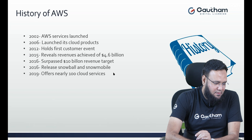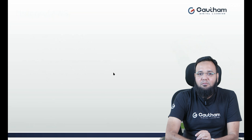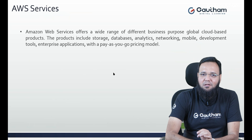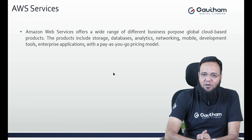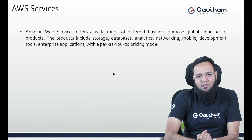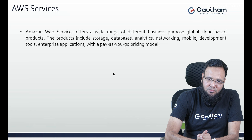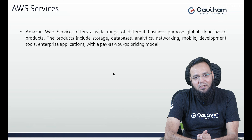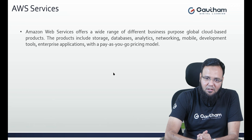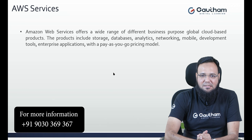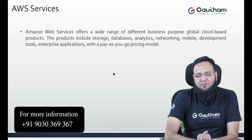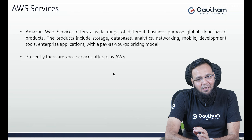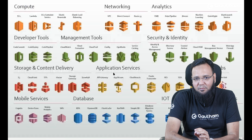AWS has released around more than 300 services. They provide all their offerings in the form of a service. Maybe you wanted to create a virtual machine — there is a service. Maybe you wanted to go for containers — there is a service. Maybe you wanted to go for IoT — there is a service. For every different offering, they call it a service, and by this time you have more than 300 services available.